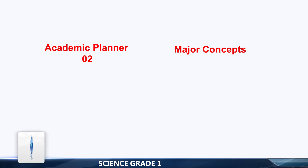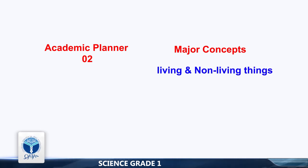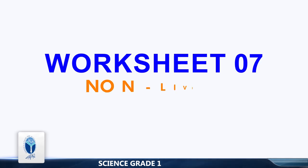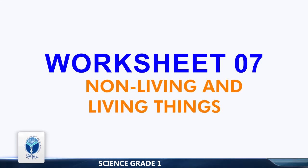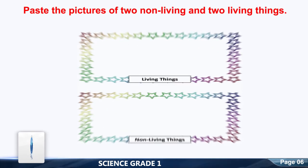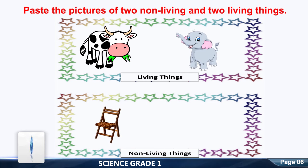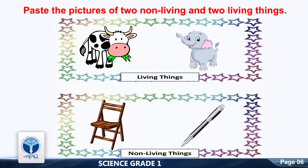Academic Planner, Unit 2. Major Concepts: Living and Non-Living Things. Worksheet number 7: Living and Non-Living Things. Paste the pictures of two non-living and two living things. We use our eyes to see things.